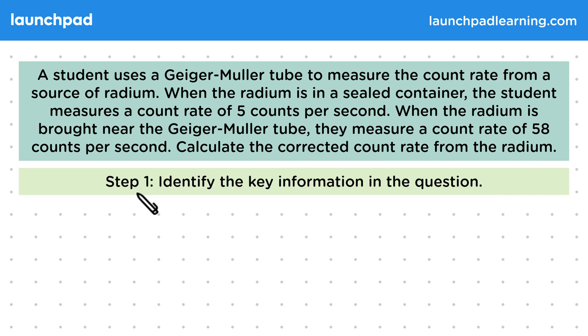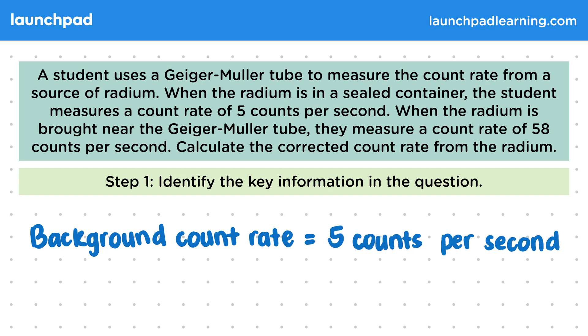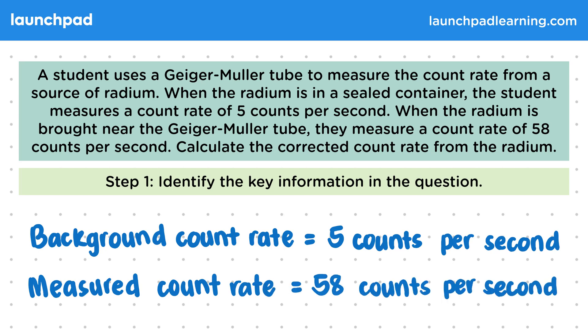So for step one, we need to identify the key information in the question. The background count rate is given to be five counts per second. Then the measured count rate is given to be 58 counts per second.